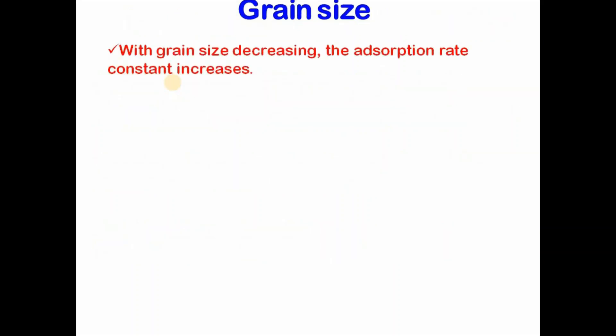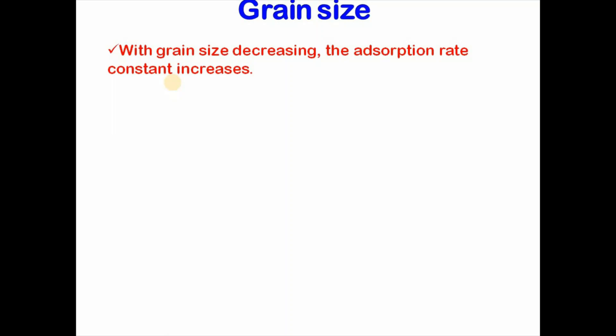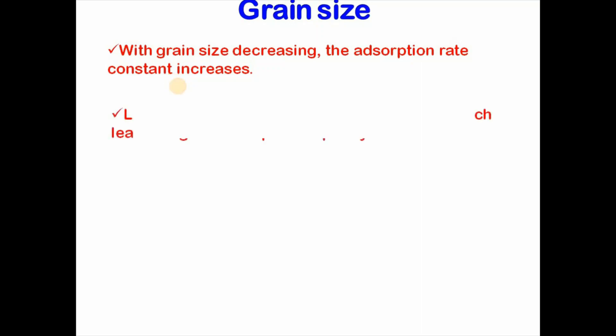Then comes grain size. Grain size or particle size is an important parameter on which adsorption depends. It is suggested that with grain size decreasing, the adsorption rate constant increases. Lower grain size particles have higher specific surface area, which leads to higher adsorption capacity.